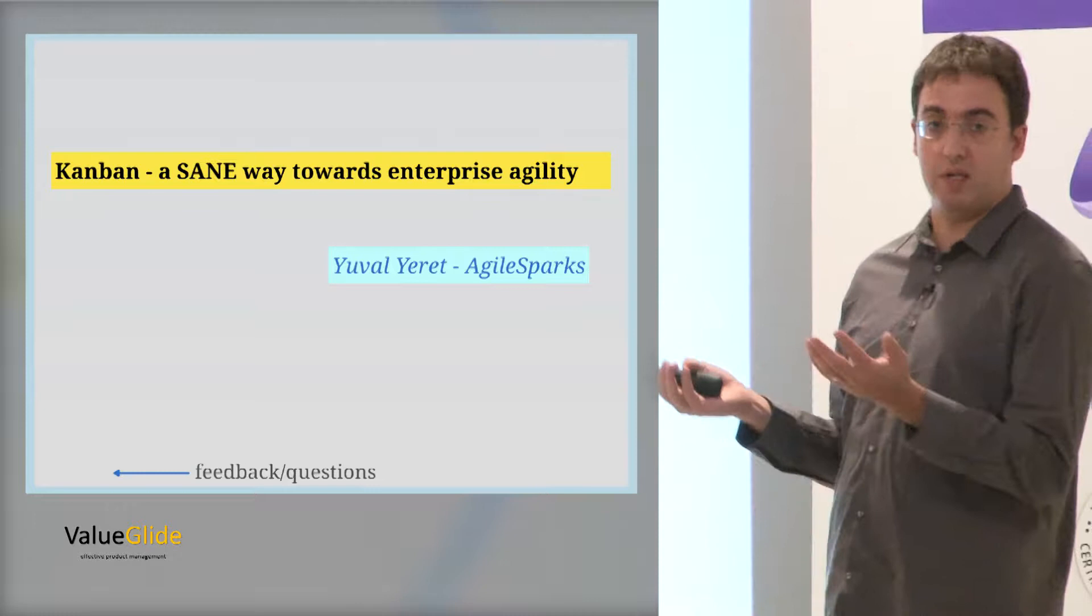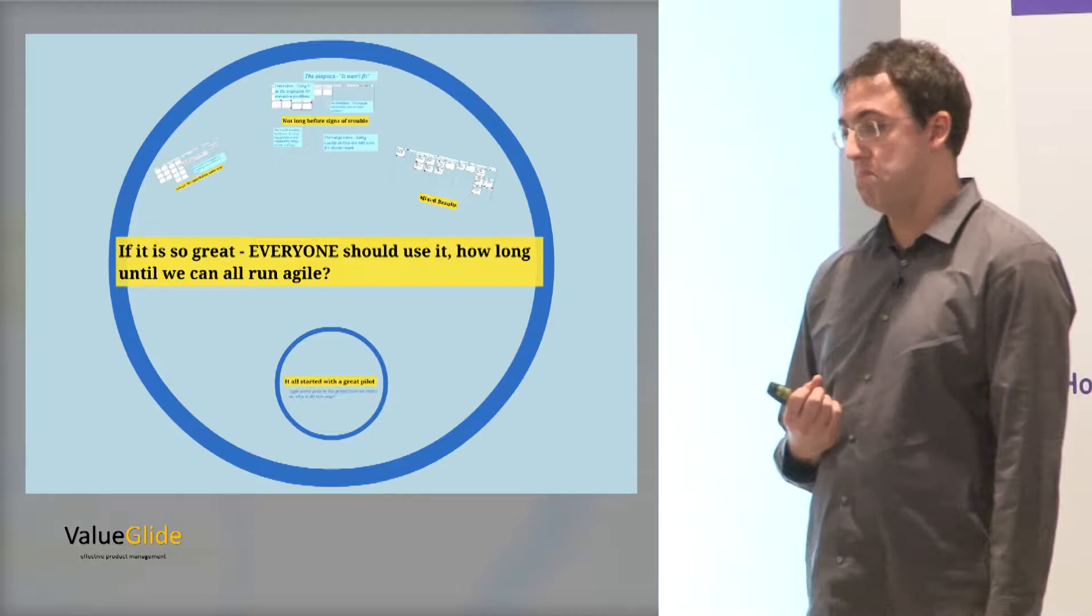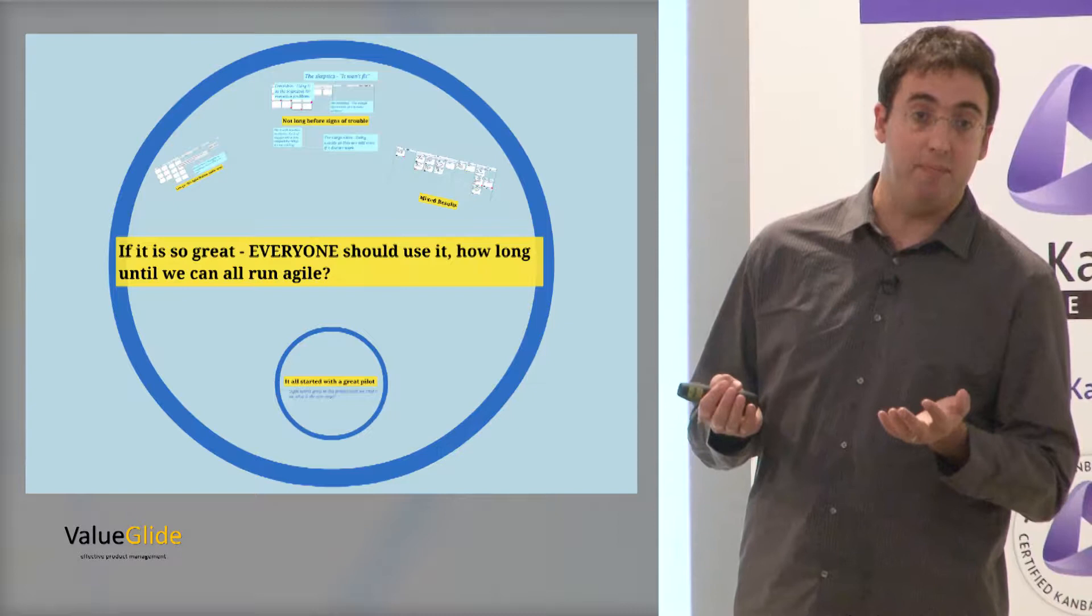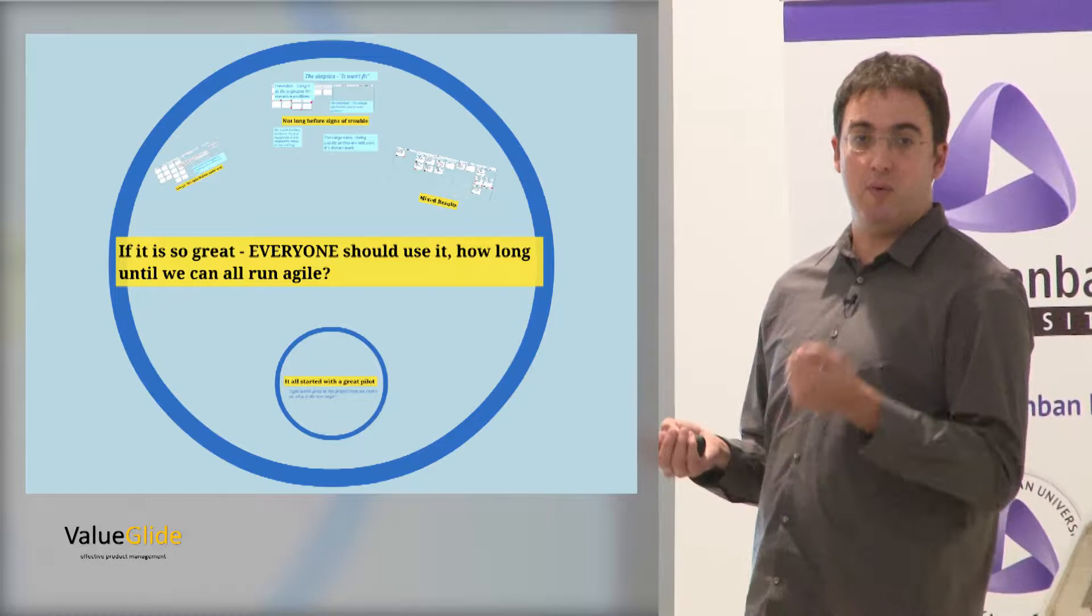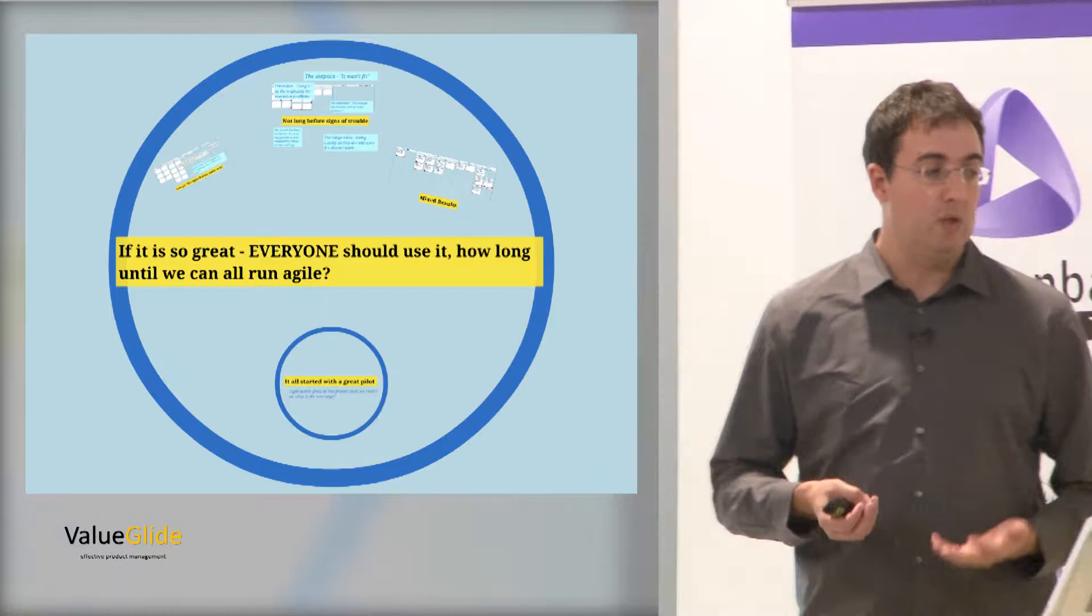All works well because Agile works. And then if it works well, something bad happens - something good and something bad. The good thing is people like it and they want to do something more with it. The bad thing is they like it too much. They want to apply the old style of rollout to this thinking.